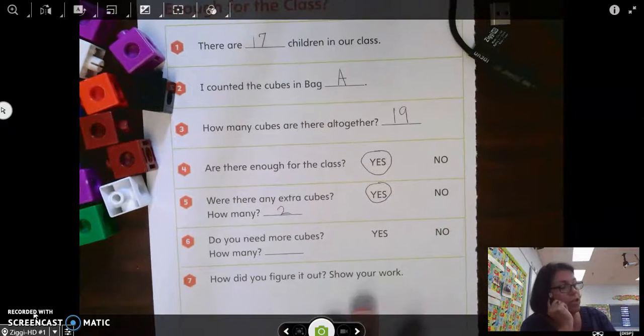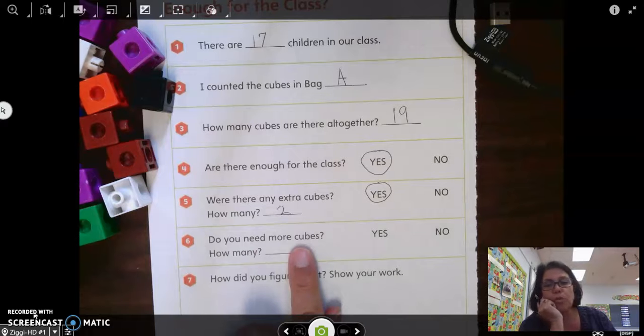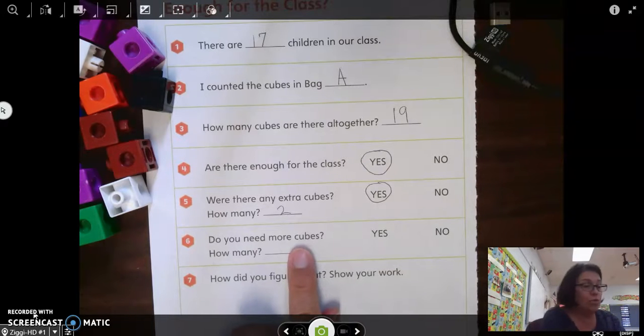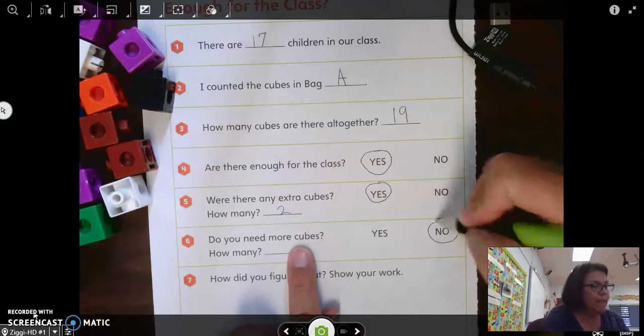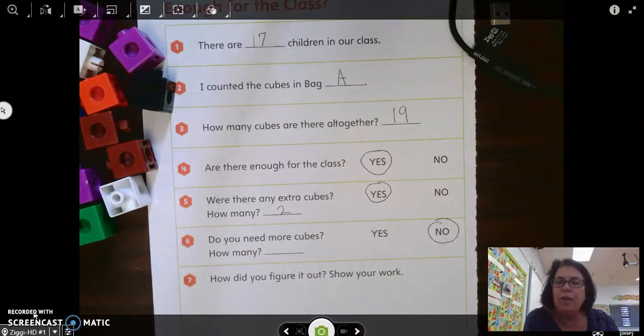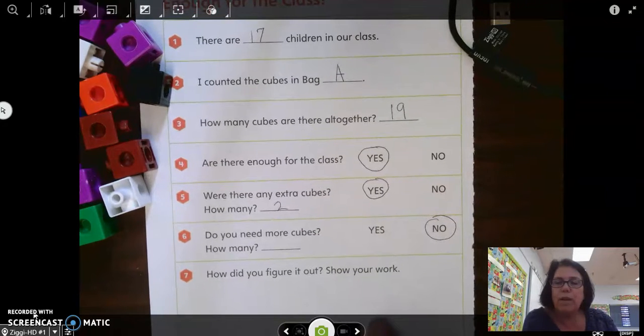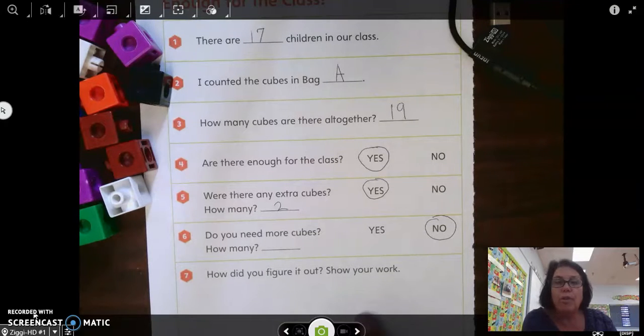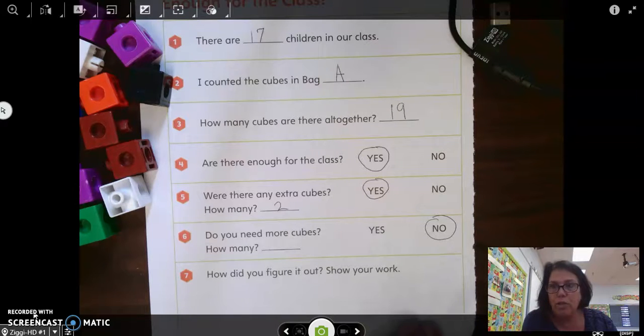And our next question is, do you need more cubes? Well, we said no, we had extra. So the answer would be no. And then finally, how did you figure it out? Show your work. So I'm going to ask you to take a few minutes right now and figure out how you would show, draw a picture, how you would show that there are 19 blocks but only 17 children and that we would have two left over. So take a few minutes, complete that, then make sure you tear out the page, put it in your orange folder to return to your teacher.